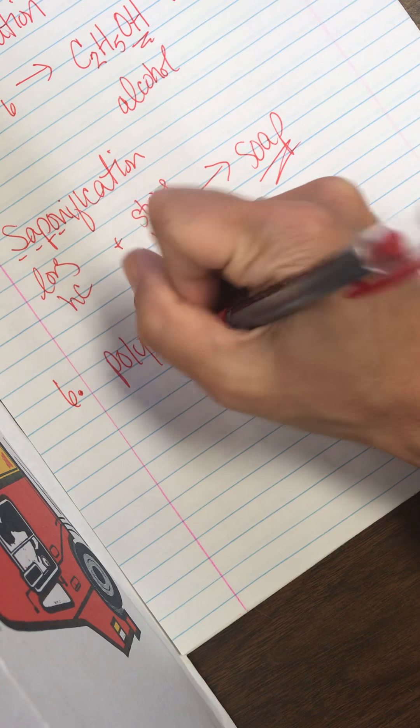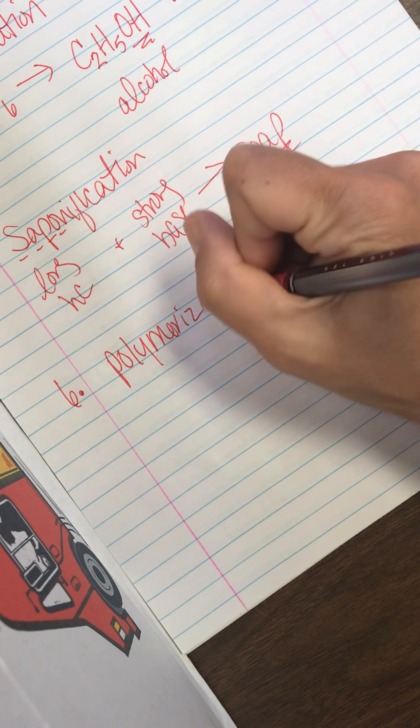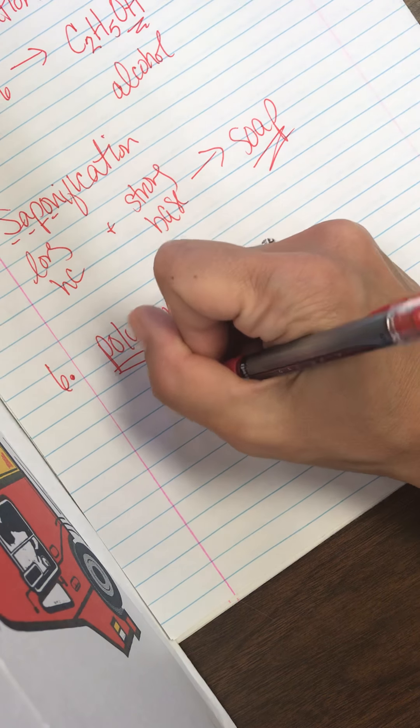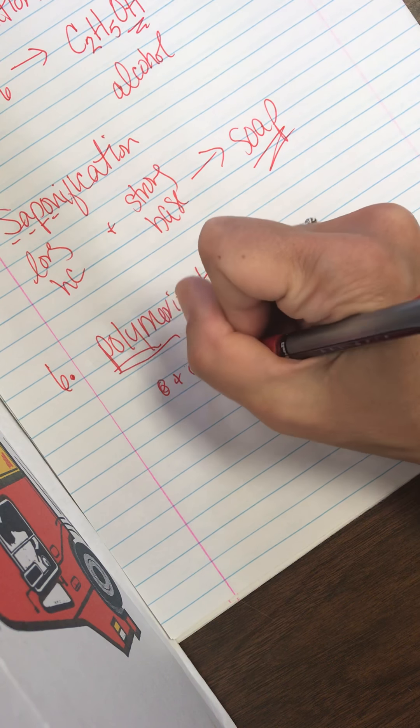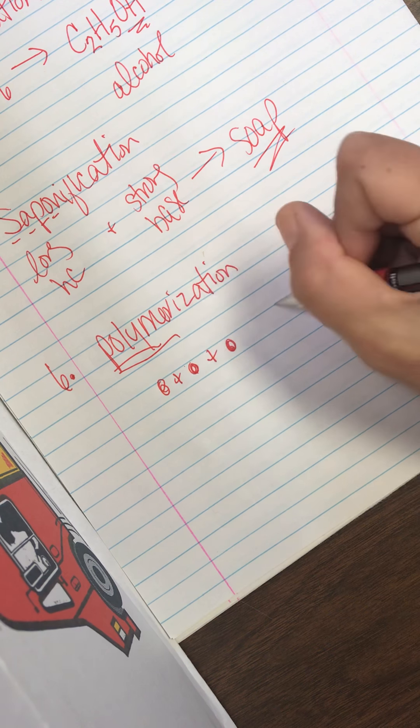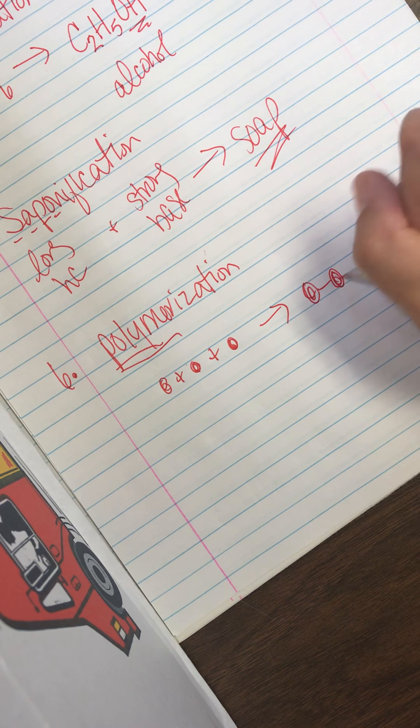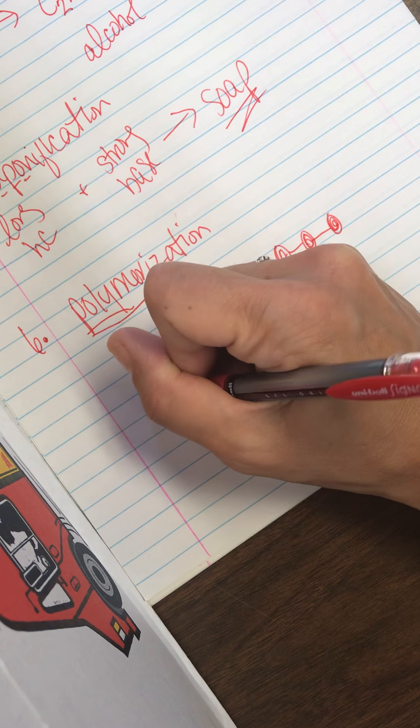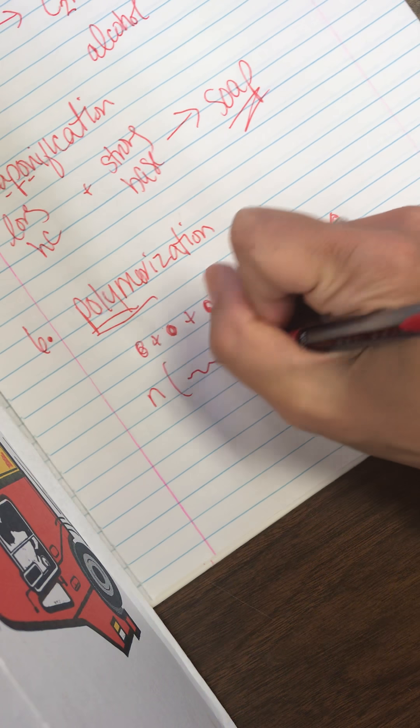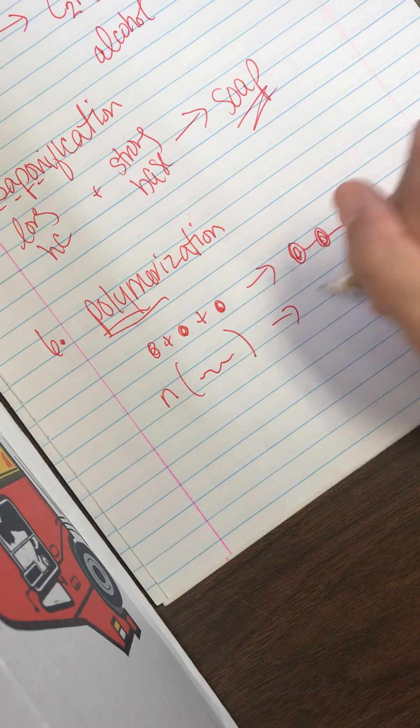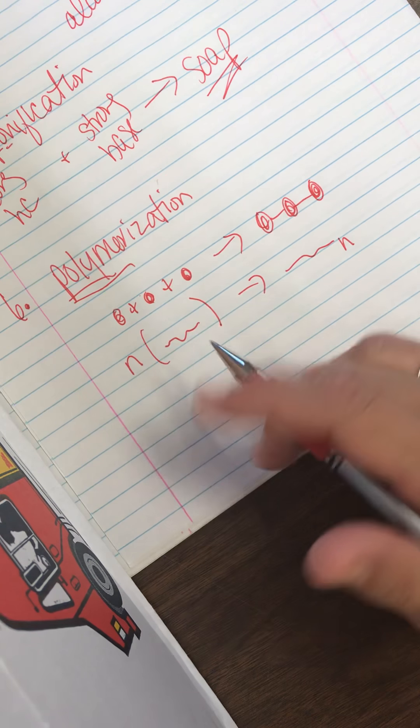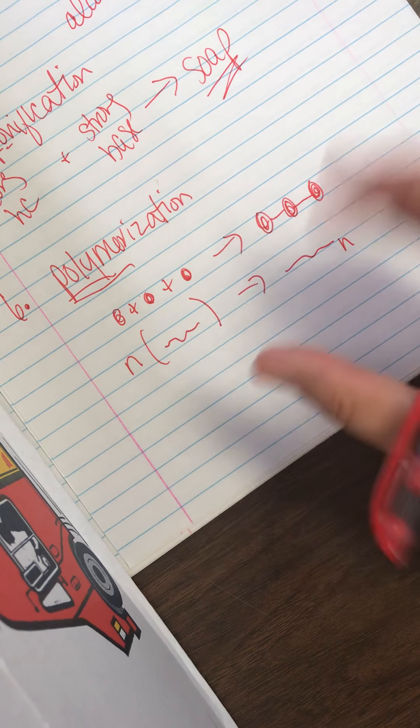All right. The next one is polymerization. And so polymer means to connect. Take little monomers and connect them. So now it's going to look like this. And that's a polymer. So very often it'll say like, oh, N of this molecule makes this molecule to the Nth. So the N means a large number. So you are taking a monomer and you are connecting them all to make a polymer.